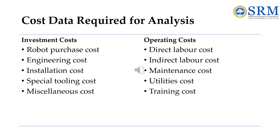We will see the kinds of cost and operating data that are used to analyze the alternative investment projects. The cost data required for the analysis is used to perform the economic analysis of a robot project, which divides into two categories: one is the investment cost and the other is the operating cost. We will see them one by one, starting with the investment cost.